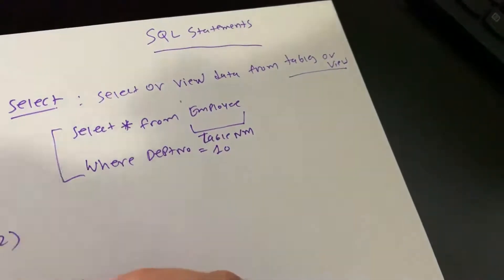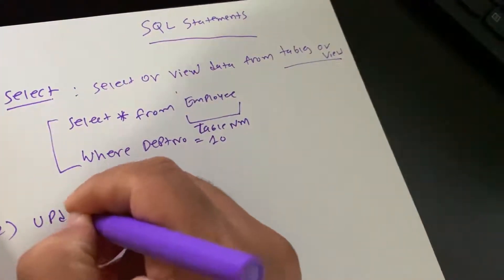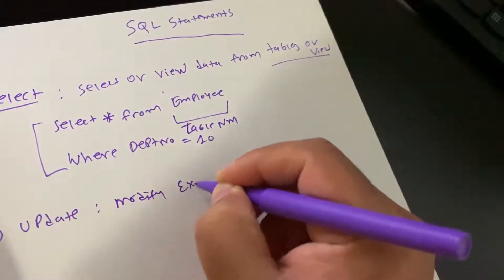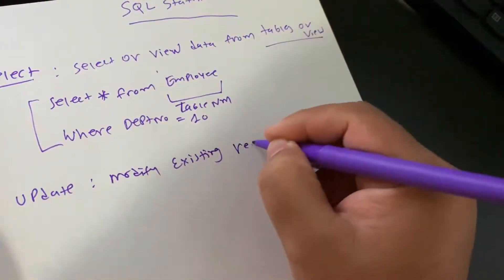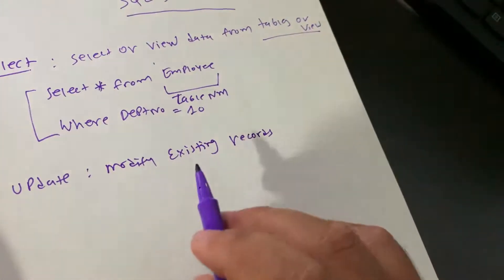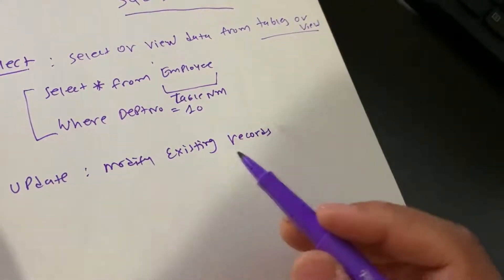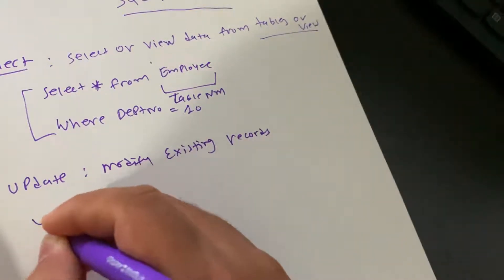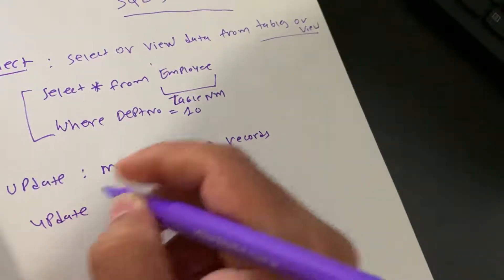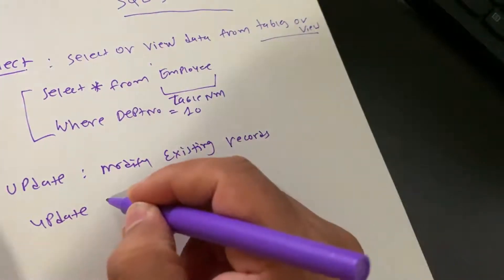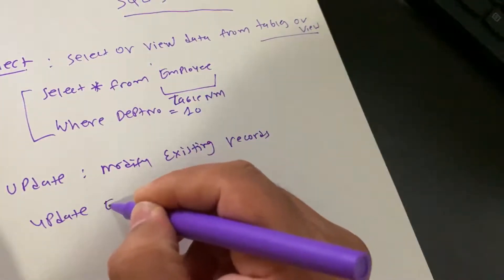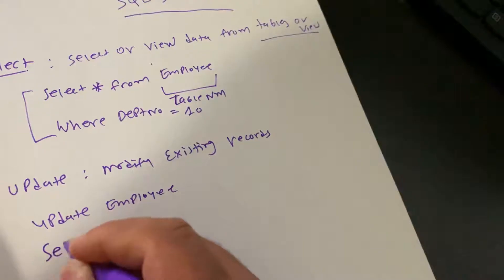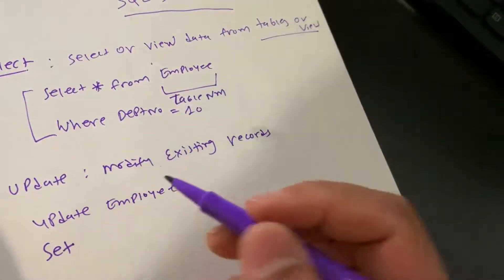Now let's look at the second statement, which is UPDATE. UPDATE is used to modify existing records — if you already have a table with data and you want to modify those existing records, you use the UPDATE statement. Here is the syntax: UPDATE employee SET — then you specify which field you want to update.